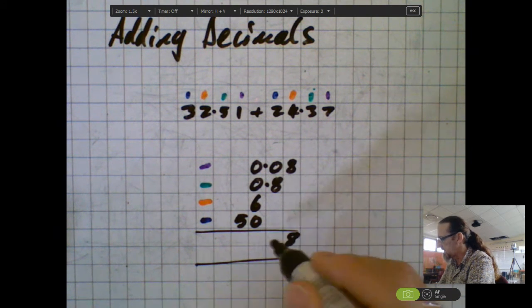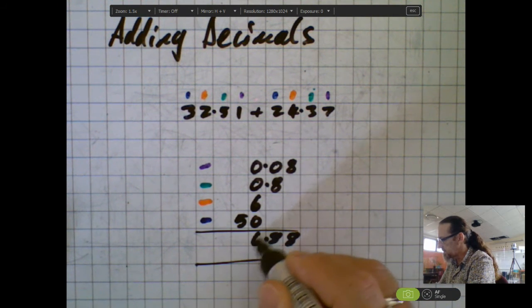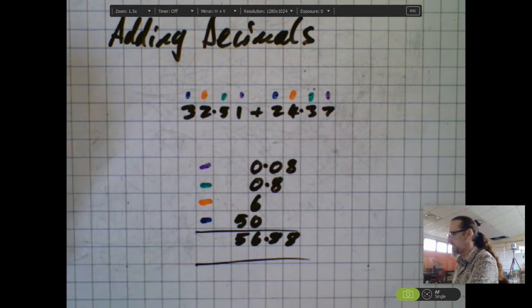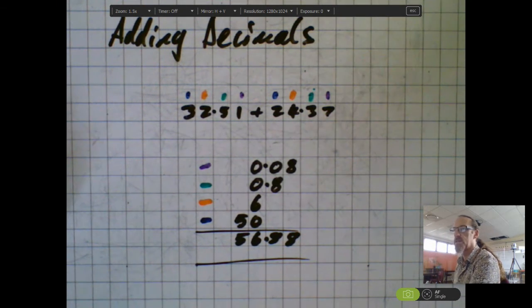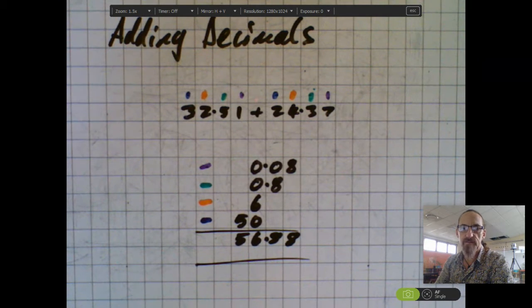But it looks kind of obvious that it's gonna be eight hundredths, eight tenths, six ones, and five tens. So my answer is 56.88 in this example. I hope that helps you with a little bit of addition for decimals today. Cheers!